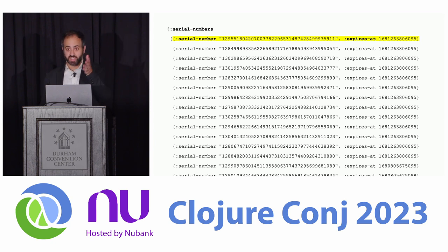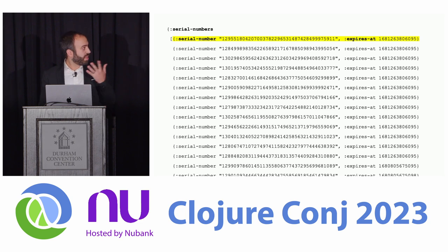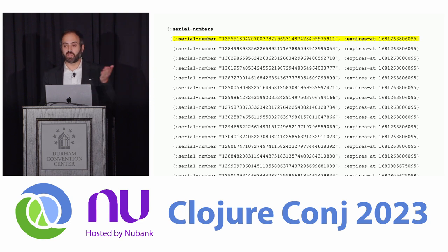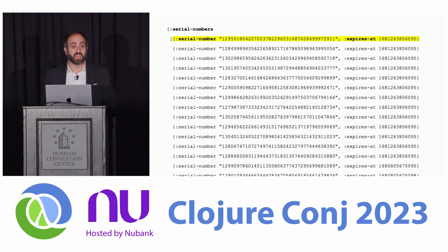What do I mean by unorganized? Eden has structure — we see a map here, it has a key serial numbers, there's a vector filled with maps, each map has two keys. It has structure, but it's not organized in a particular way that's useful to us. It's probably listed in whatever order the revocations happened in, or whatever order the process that slurped this out of a database from the system of authority. We made an Eden file and put it on S3. So in order to use this, the first thing you have to do is read the whole thing into memory.